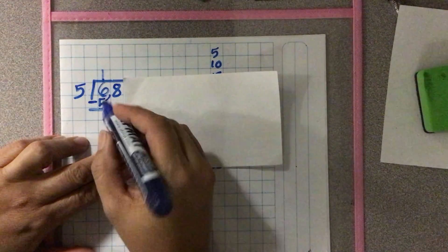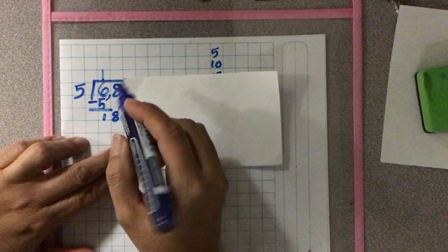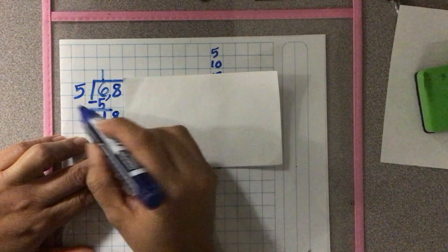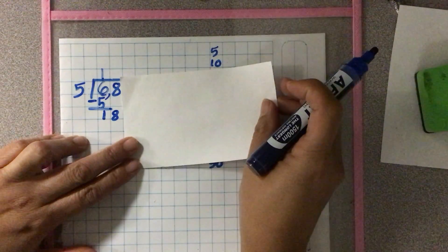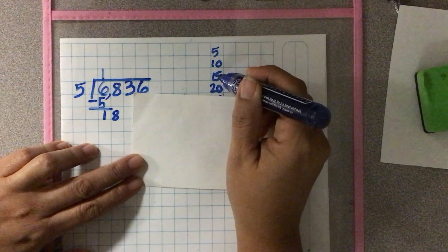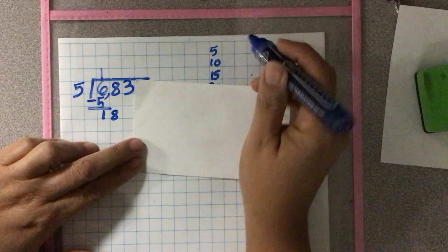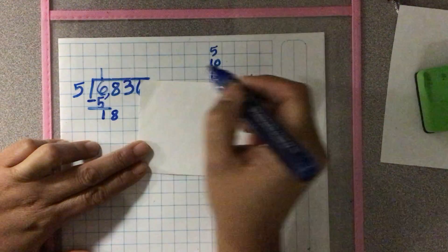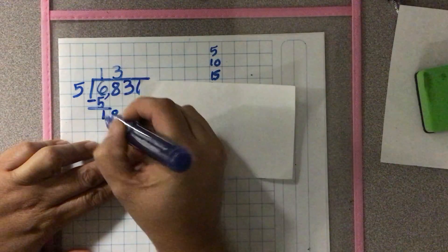Now we'll have 18 hundreds. So I have here 18 hundreds divided by 5. I don't have 18 here, but I have 15. So how many times would it be? One 5, another 5, another 5 is 15. 3 times 5 is 15.